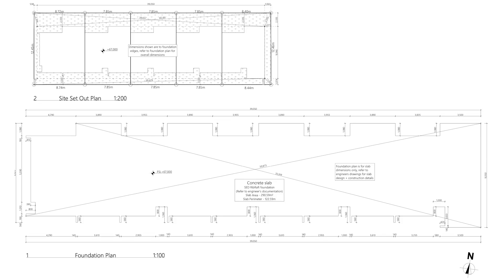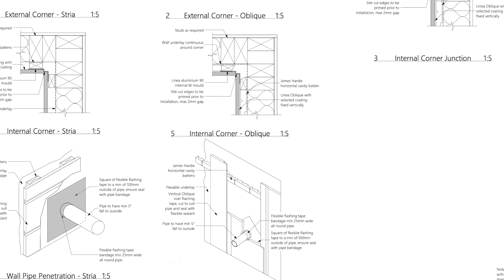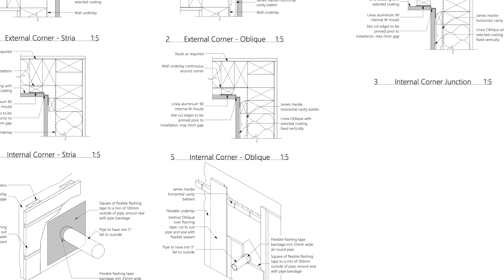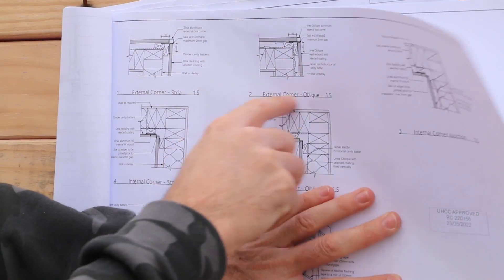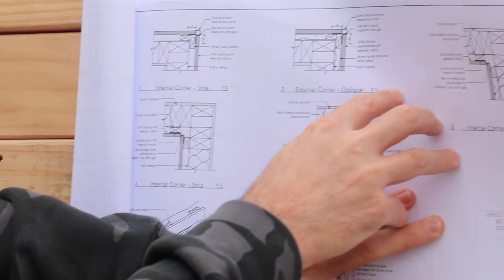Working or architectural drawings include details such as foundations, roof, layout, bracing plans, and then a whole raft of cladding details. They take the concept and give it more depth, and we'll analyze some of these details more later in the video.